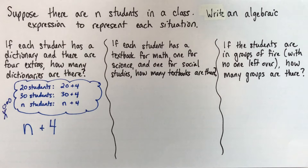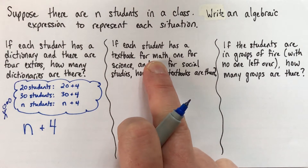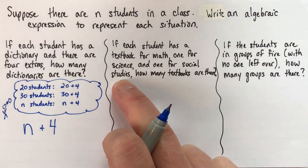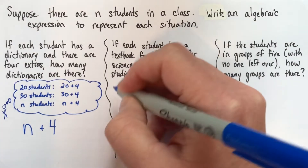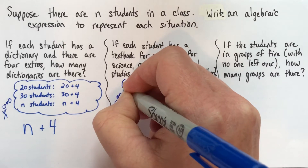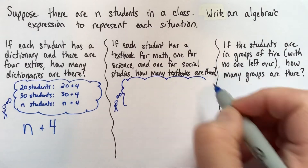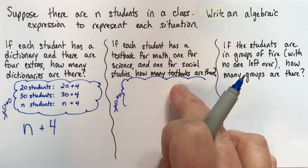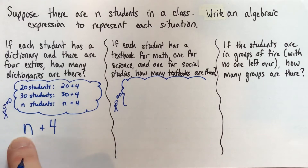For the second question, I'm going to show two different good ways of thinking about it. Suppose we're looking at textbooks: each student has a textbook for math, a textbook for science, and a textbook for social studies — so each student has three textbooks. We want to know how many textbooks there would be all together. My answer is going to be an expression like n plus 4.